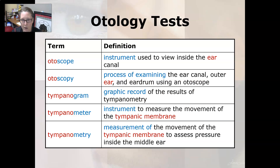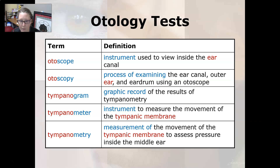Now some otology tests. An otoscope is an instrument used to view inside the ear canal. Otoscopy is the process of examining the ear canal, the outer ear, and the eardrum using an otoscope.